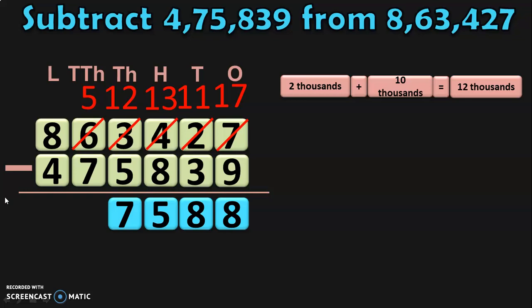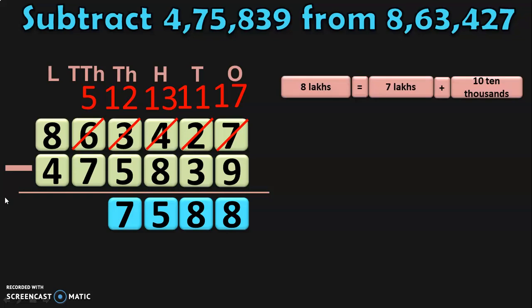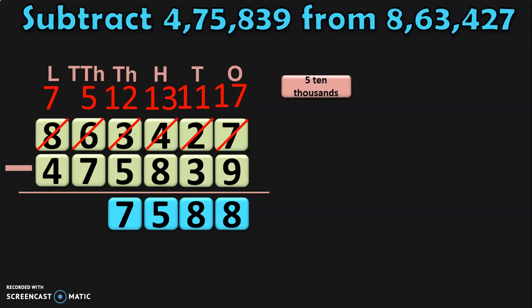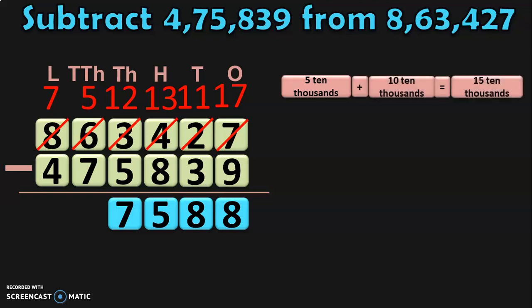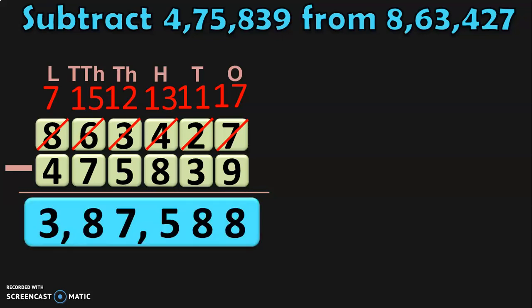Now, move to the ten thousands place where you have to subtract 5 minus 7. Since 7 is greater than 5, move to the lakhs place where you have 8 lakhs. 8 lakhs can be regrouped as 7 lakhs plus 10 ten thousands. Retain the 7 lakhs and take the 10 ten thousands to the ten thousands place. In the ten thousands place, we already have 5 ten thousands. 5 plus 10 ten thousands gives you 15 ten thousands. 15 minus 7 gives you 8. In the lakhs place, 7 minus 4 gives you 3. So, the difference between the two 6-digit numbers is 3,87,588.